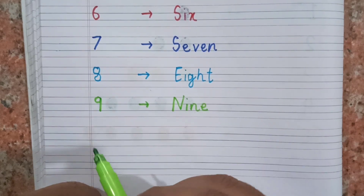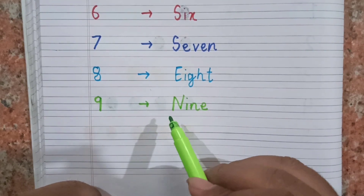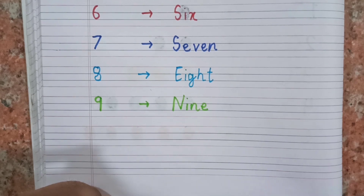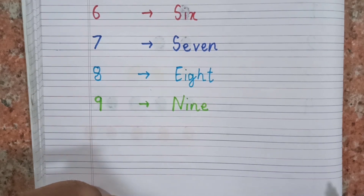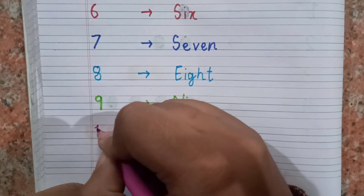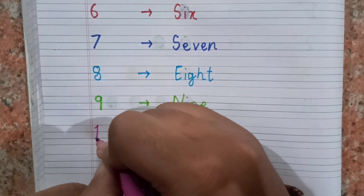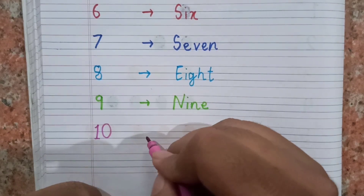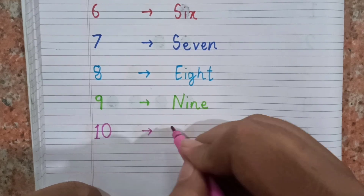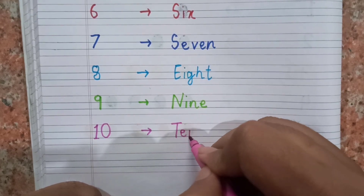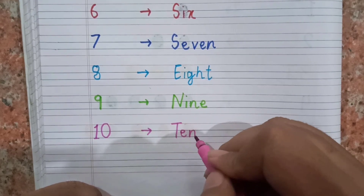After nine, the next number is ten. Now I'm writing ten: one zero — ten. And the spelling of ten is T E N. Ten.